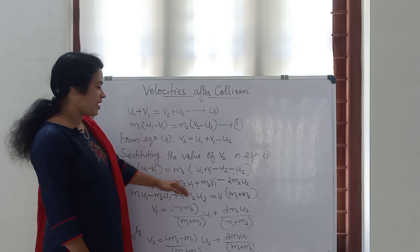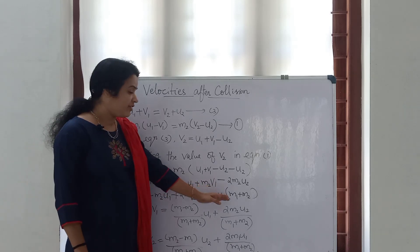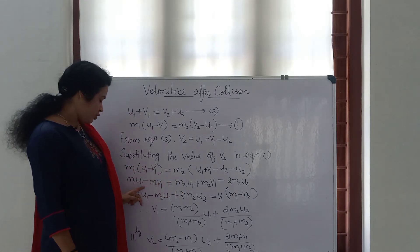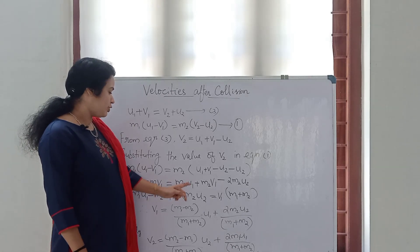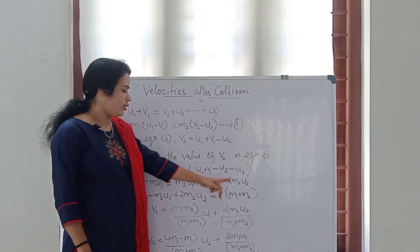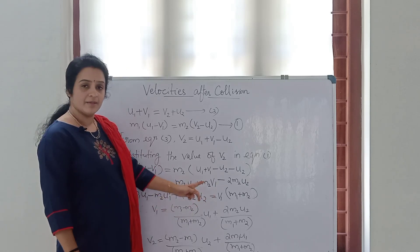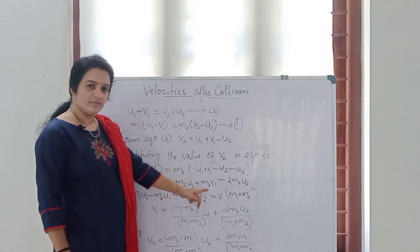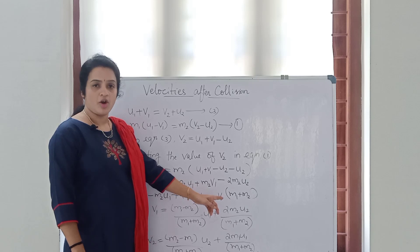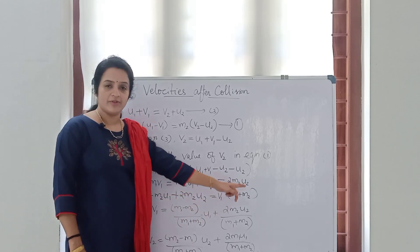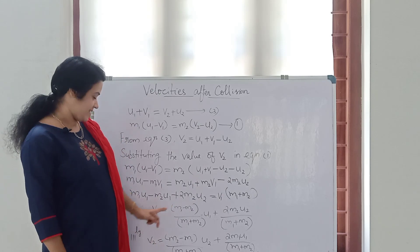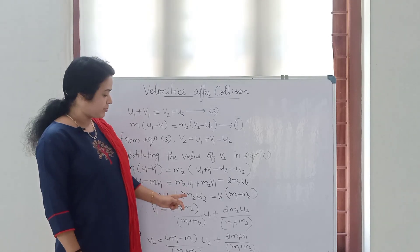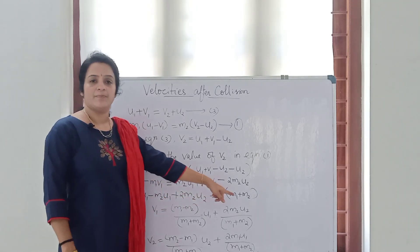In the next step we write the terms with v1 together, and move other terms to the left-hand side. So we get: m1 u1 minus m2 u1 plus 2 m2 u2, equal to v1 into (m1 plus m2). We are taking v1 as common. Now we can find v1: v1 will be equal to m1 u1 minus m2 u1 plus 2 m2 u2, all divided by m1 plus m2.